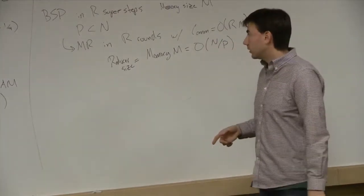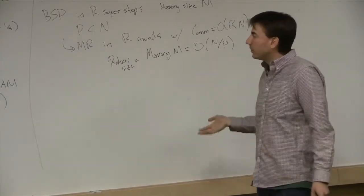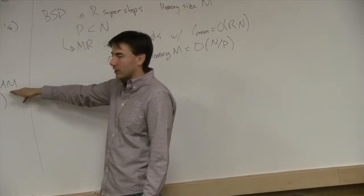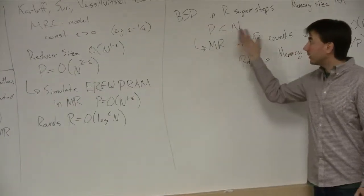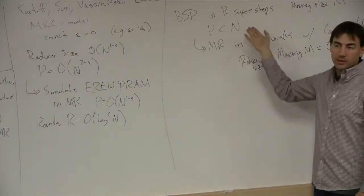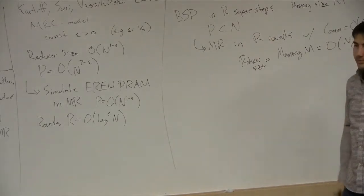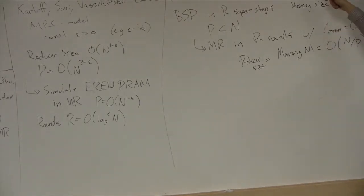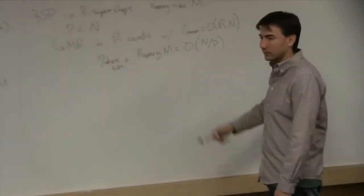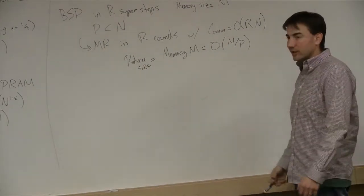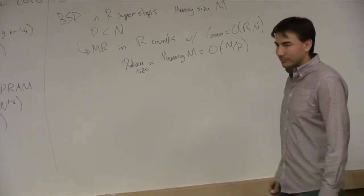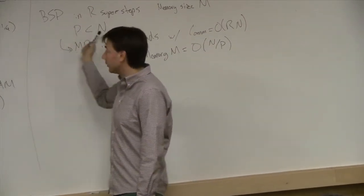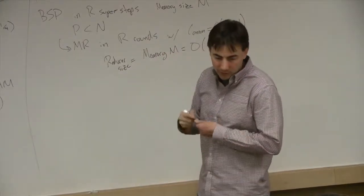This result is not surprising, but previous results only tried to map to EREW PRAM which isn't a great fit. These authors were first to suggest looking at BSP, which is a much better match for MapReduce. They also showed a reduction from CRCW PRAM - which gave a much better reduction than the exclusive-exclusive variant. This paper was published around 2010-2011 but didn't get much attention, while the MRC paper got more.